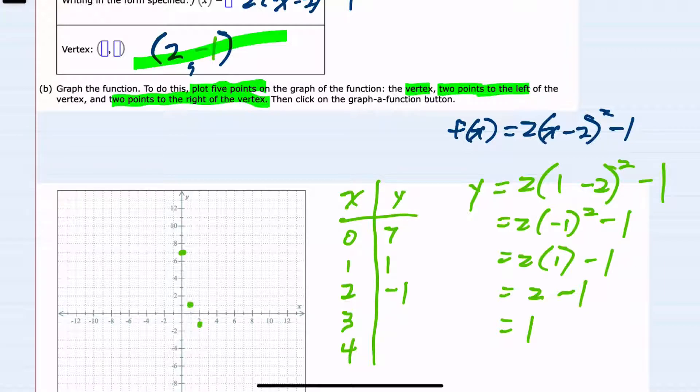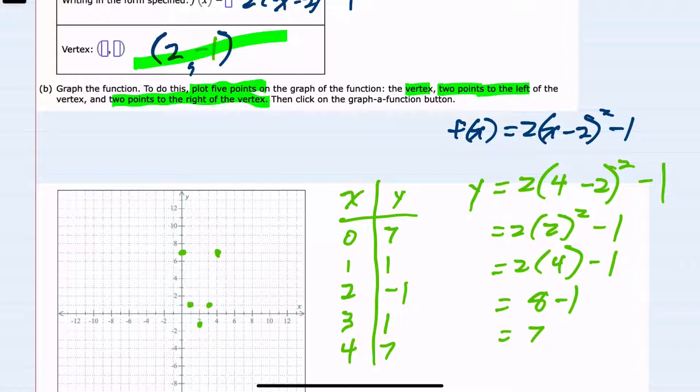I'll move to substituting 3 in for x. Inside the parentheses, we now have 3 - 2, which is 1. 1 squared is 1. 2 times 1 is 2, and 2 - 1 is 1. So our next point is (3, 1). Lastly, substituting 4, we would have inside the parentheses 4 - 2, which is 2. 2 squared is 4, 2 times 4 is 8, and 8 - 1 is 7. So (4, 7) is my last point. With those 5 coordinates, we can see the shape of the graph.